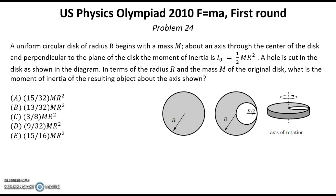Problem number 24. Solution for this problem you can find below this video in the reference. A uniform circular disk of radius R begins with a mass M.